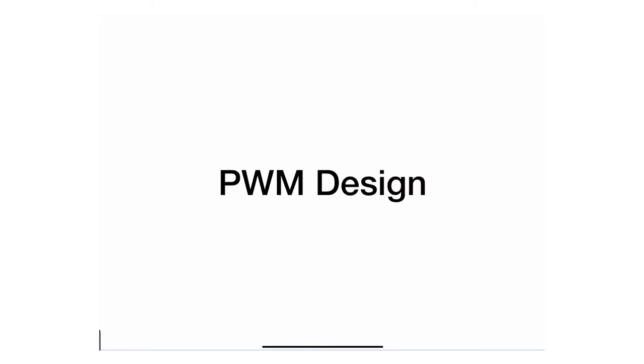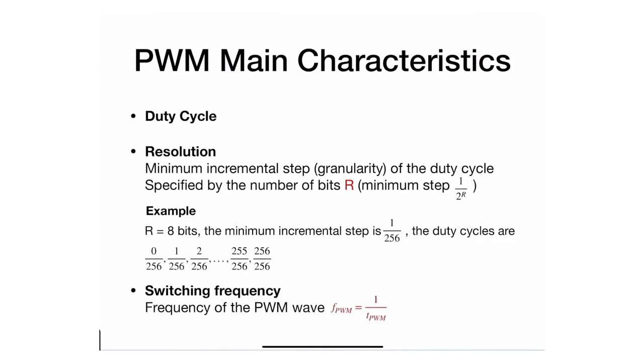Now that we know what a pulse-width modulation signal is, we will move into designing a digital circuit that can generate such a signal. Before discussing the design of the circuit, I want to go through the main characteristics of a pulse-width modulation signal.